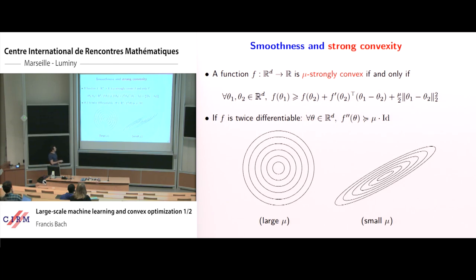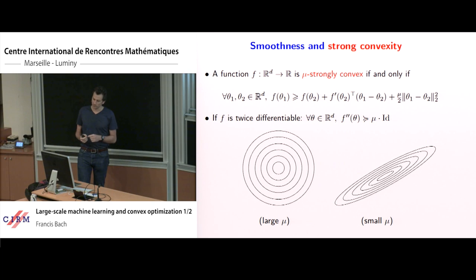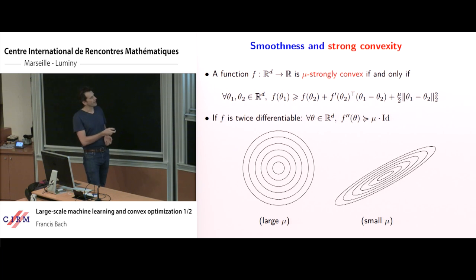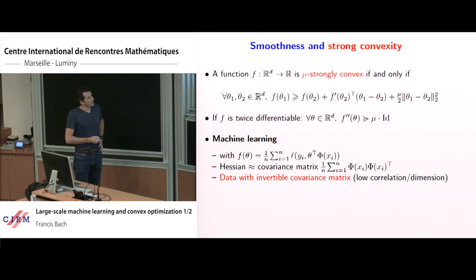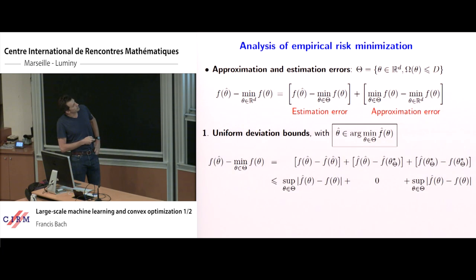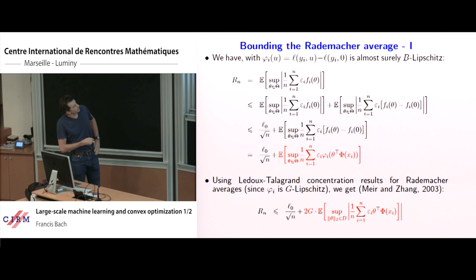One image I will use often today is for intuition on the value of μ. A problem with a good condition number has large μ compared to L — since μ is always smaller than L — so μ is close to L, making it easy to optimize. An ill-conditioned problem has a smaller μ.